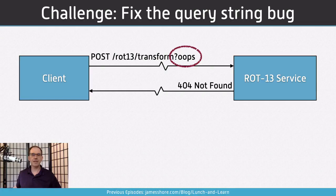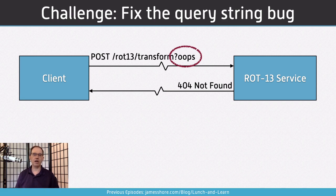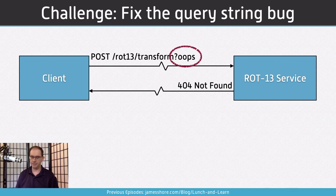We already have some activity in the chat. Your questions and comments are very welcome. This is a short episode today, so we've got lots of time for additional questions. So let's get to the actual challenge: we want to fix the query string bug in our microservice in a way that enhances the long-term quality of our application — actually reduce the number of defects we see over time and prevent defects from happening in the first place.